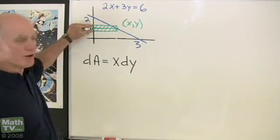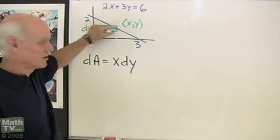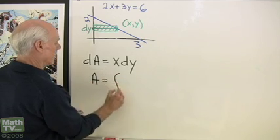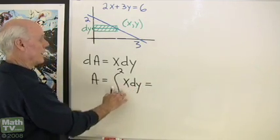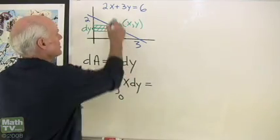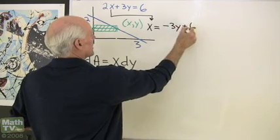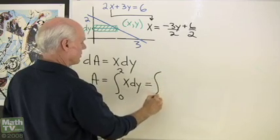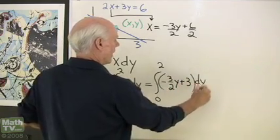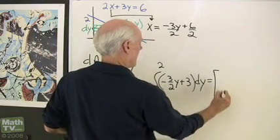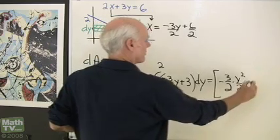So my element of area of the test rectangle is x dy. I take all these test rectangles and integrate from y equals 0 to y equals 2, so the total area is the integral from 0 to 2 of x dy. Since I'm integrating with respect to y, I solve the equation for x: x is equal to negative 3 halves y plus 3. Substituting that in, I integrate to get negative 3 halves times y squared over 2 plus 3y.